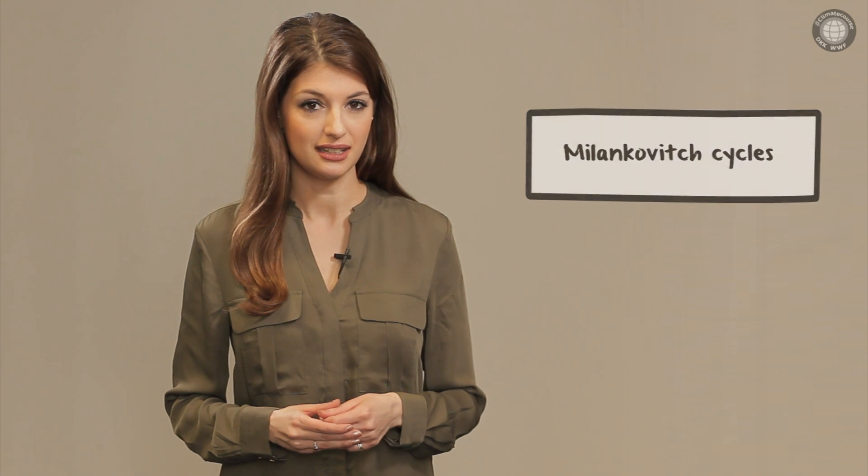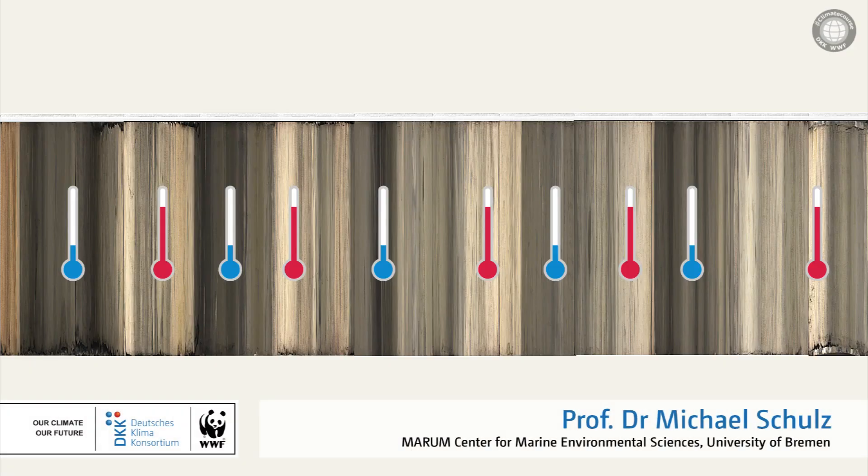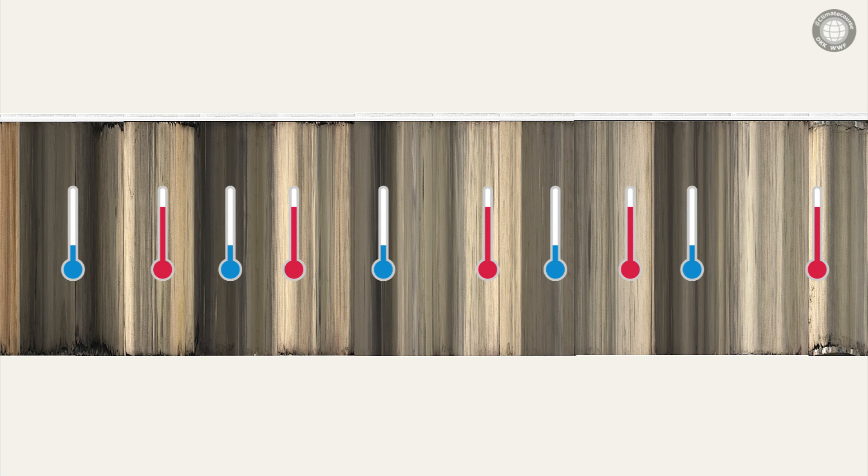The cause can be found in the so-called Milankovitch cycles. These are periodic, regular fluctuations in the Earth's orbit around the Sun. We are now familiar with the succession of interglacial and glacial periods in geological history. This now begs the question, what are the causes for these natural climate variations?